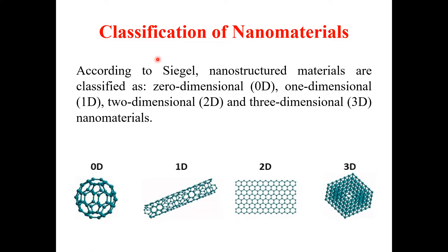Today's lecture is about the classifications of nanomaterials. The first thing that comes to mind is who was the person that first gave the idea for the classification of nanomaterials. That was Siegel — it was Siegel who first classified nanomaterials according to their dimensions: zero dimensions, one dimension, two dimensions, and three dimensions.